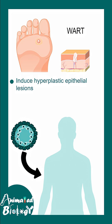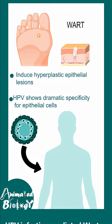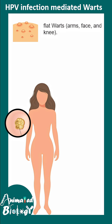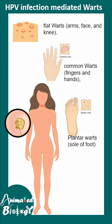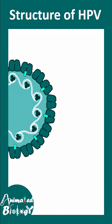HPV can cause hyperplastic epithelial lesions known as warts. They have dramatic specificity for epithelial cells. When the warts are on the face, arms, or knees, they are flat warts. They can also appear on the fingers or under the sole, where they are known as plantar warts. Sometimes the anogenital area also shows these warts.